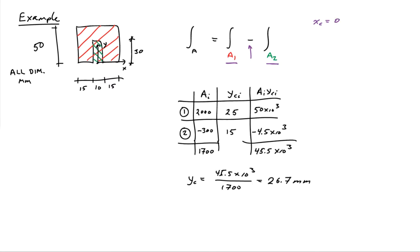The area of part 1 is 2,000 millimeters squared, and the area of part 2 is minus 300 — I put the minus sign because I'm subtracting it; that's 30 times 10. The total area is 1,700 millimeters squared. The centroid of area 1 is 25 millimeters. Area 1 is the whole rectangle including the cutout. The centroid of area 2 is 15 millimeters in the y direction.